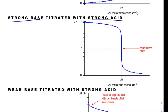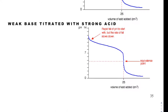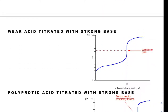For a weak base titrated with a strong acid, the pH is not super high but is kind of high, and the pH at the equivalence point is less than 7 — that tells you it was a weak base titrated with a strong acid. On the flip side, for a weak acid titrated with a strong base, the pH at the equivalence point is greater than 7, so that's how you know a strong base was being added to a weak acid.